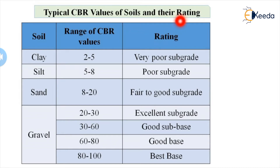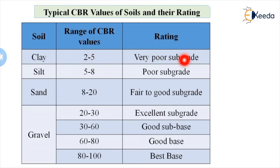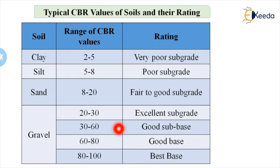Typical CBR values by soil type: Clay has a very low CBR of 2–5 (very poor subgrade); Silt has CBR 5–8 (poor subgrade); Sand has CBR 8–20 (fair to good subgrade); Gravel has CBR 20–30 (excellent subgrade). CBR 30–60 is good subbase, 60–80 is good base, and 80–100 is best base. A higher CBR percentage indicates better soil quality.